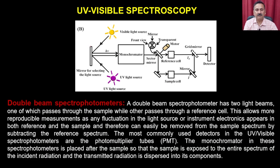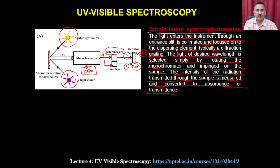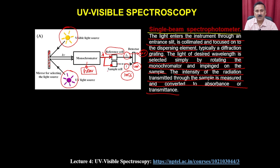In a double beam spectrophotometer, there are two actual light beams: one passes through the sample while the other passes through a reference cell. This allows more reproducible measurement, as fluctuations in the light source or instrument electronics appear in both reference and sample and can be removed by subtracting the reference spectrum. In a single beam spectrophotometer, if there is any fluctuation in the direct light, you will not be able to map or measure it — that is one drawback of single beam instruments.